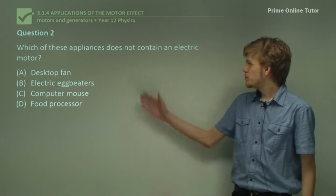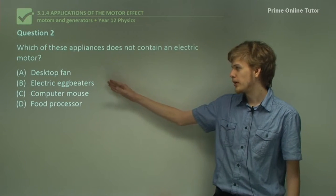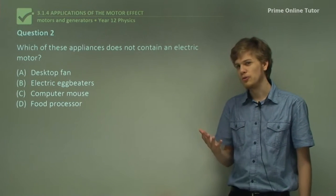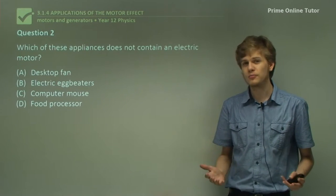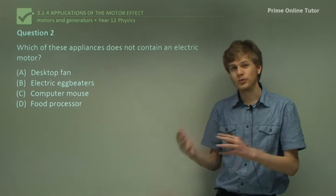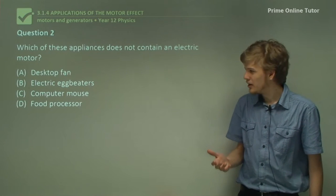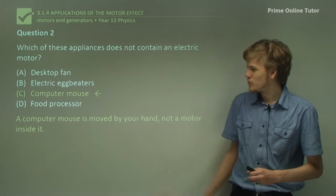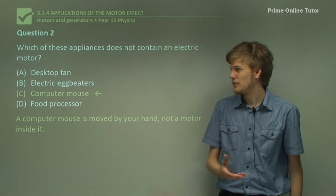Question two: which of these appliances does not contain an electric motor? Is it a desktop fan, electric egg beaters, computer mouse, or food processor? A desktop fan has a fan blade that's constantly rotating, so it must be turned by an electric motor. Electric egg beaters have beaters that are constantly turned. The food processor has a whirring blade, once again turned by an electric motor. The only one that doesn't fit the pattern is, of course, the computer mouse — it's moved by you, not a motor.